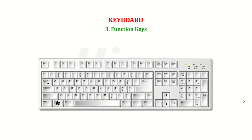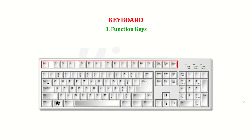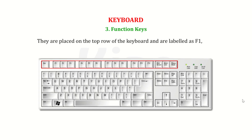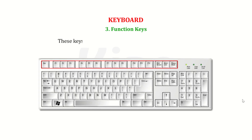Number 3 — Function keys: They are used to perform specific tasks. They are placed on the top row of the keyboard and are labeled as F1 to F12. These keys have different functions in different programs.